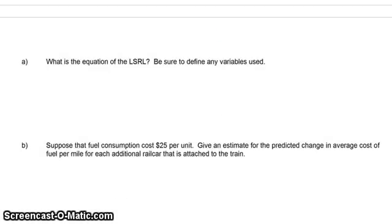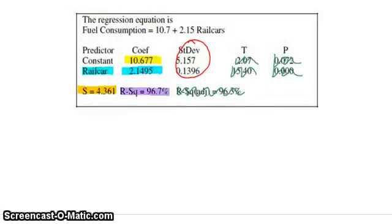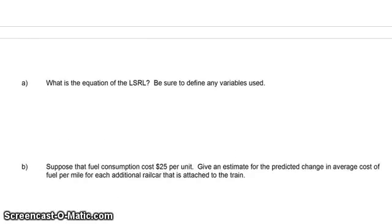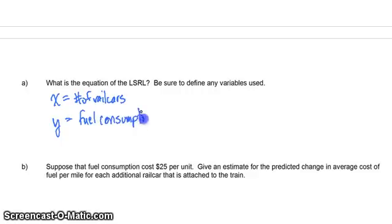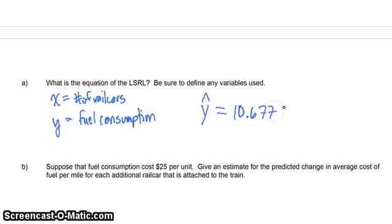What is the equation of the LSRL? Be sure to define any variables used. This is that straightforward — they gave it to us. So: X is equal to the number of rail cars, and Y is equal to fuel consumption. Then I can say y-hat — the estimated fuel consumption — is equal to 10.677 plus 2.1495x.